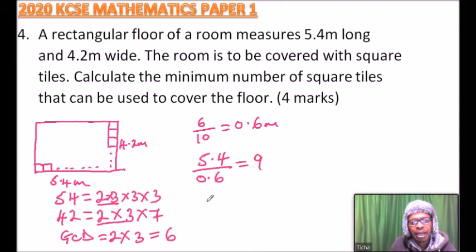Then we take 4.2 divided by 0.6, which gives us 7. This means seven squares will fit on the shorter side and nine squares on the longer side.